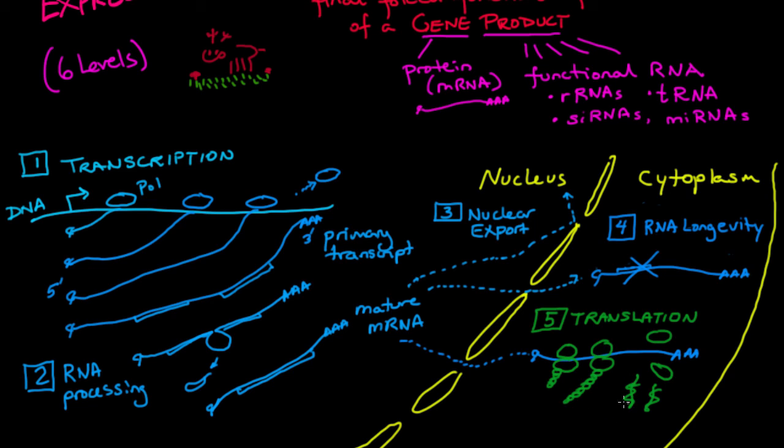Now for some proteins, that's it. It's made it. It's a functional gene product. And we say that that protein is expressed and its gene is expressed. There we have the happy glow lines that say that that protein is expressed.